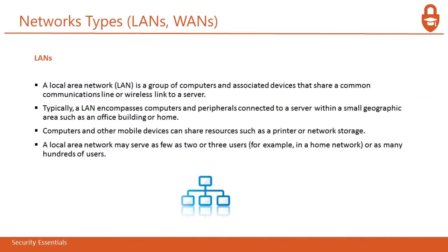First is network types — LANs and WANs. A LAN, or local area network, is a group of computers and associated devices that share a common communication line or wireless link to a server. Typically, a LAN encompasses computers and peripherals connected to a server within a small geographic area such as an office building or a home. Computers and other mobile devices can share resources such as a printer or network storage. A LAN may serve as few as two or three users or as many as hundreds or thousands of users.